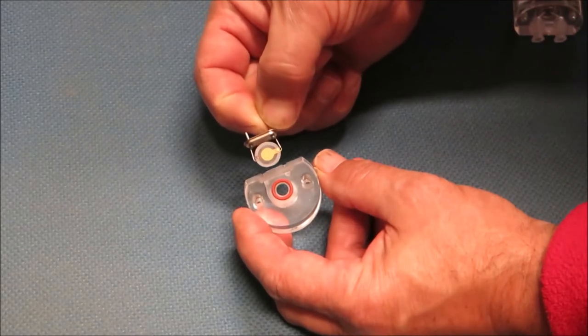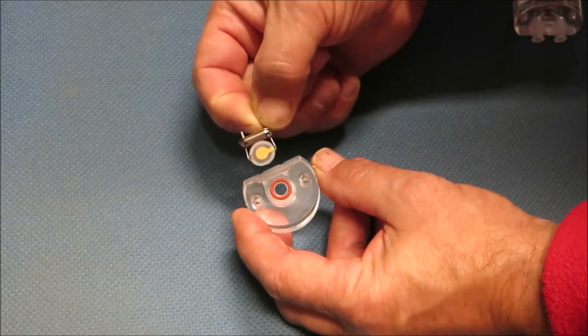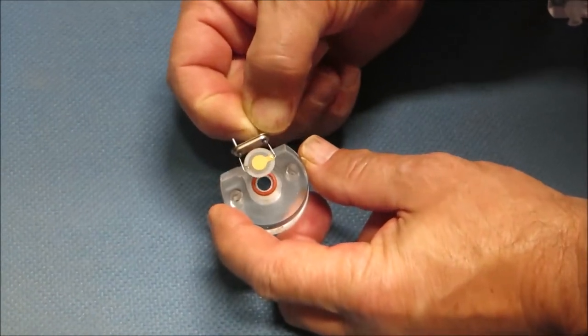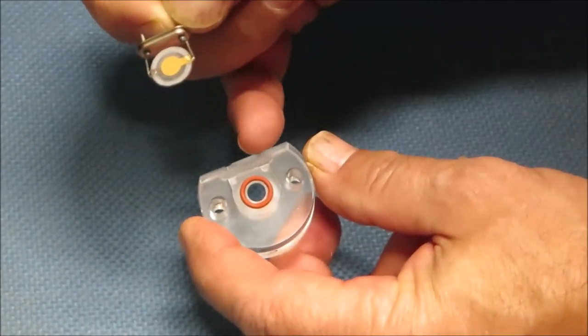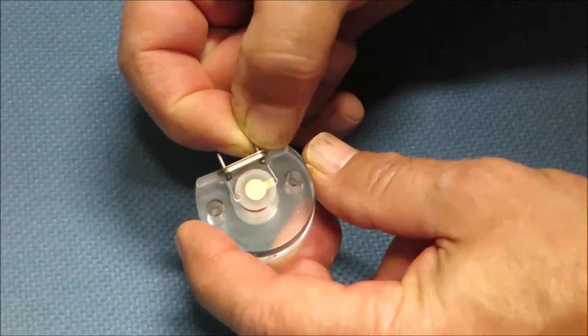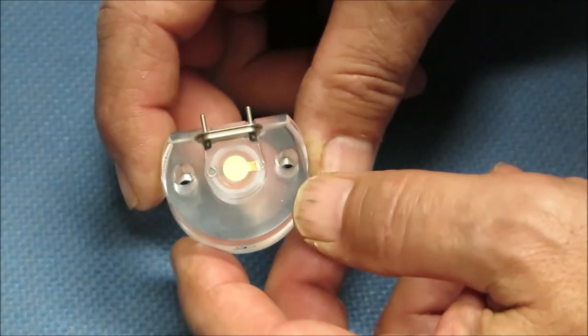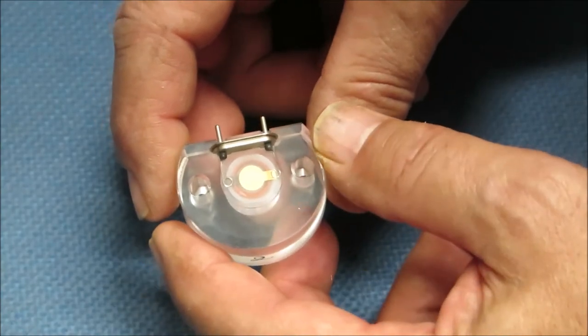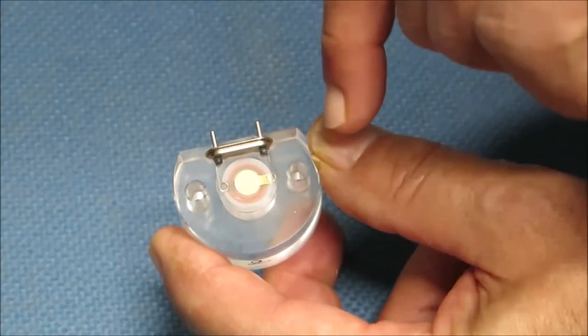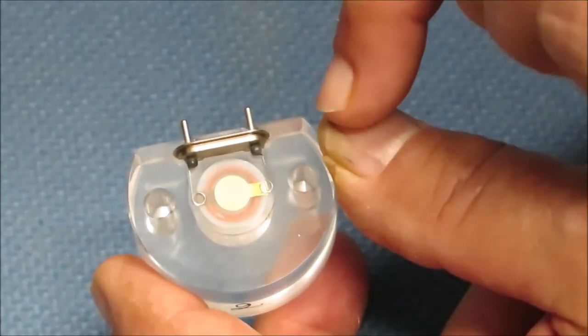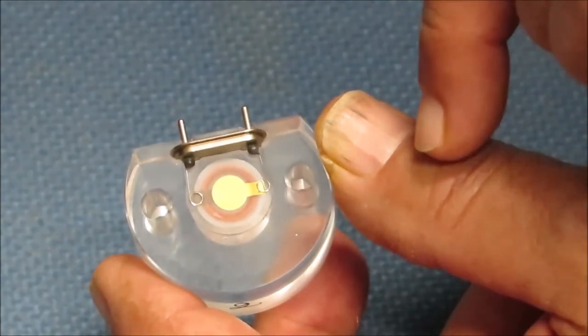The quartz should be positioned onto the static half because there is a hole capable of containing it perfectly. As you can see, the quartz fits perfectly here, but we have to pay attention that the gold pad is not overlapping the o-ring underneath.